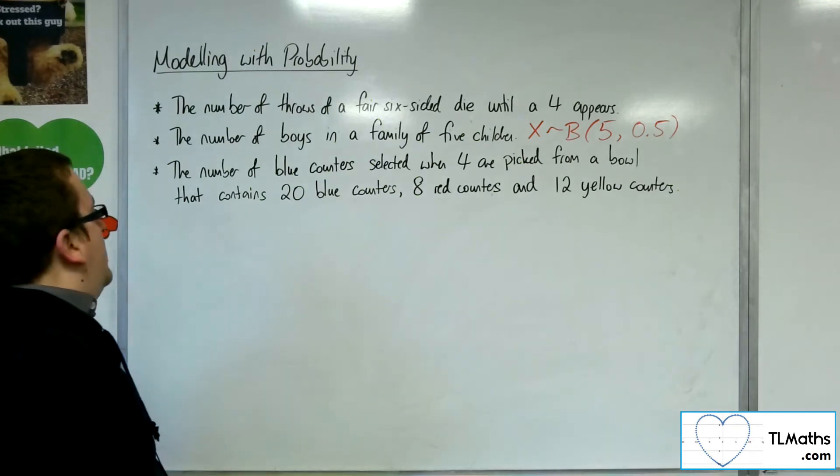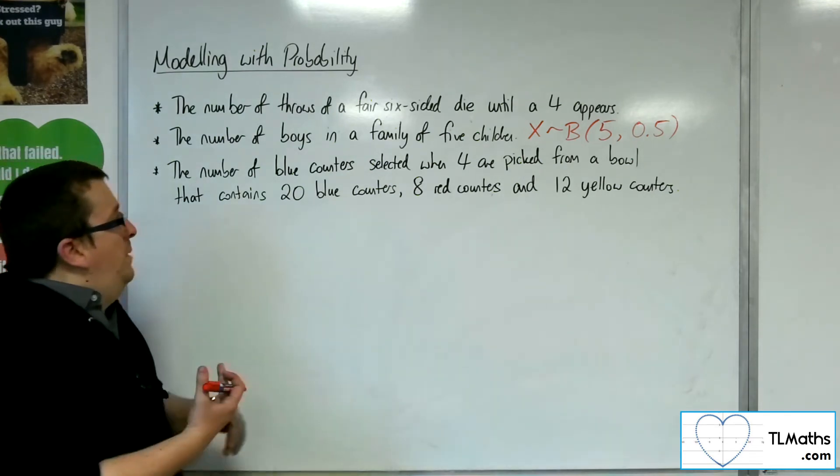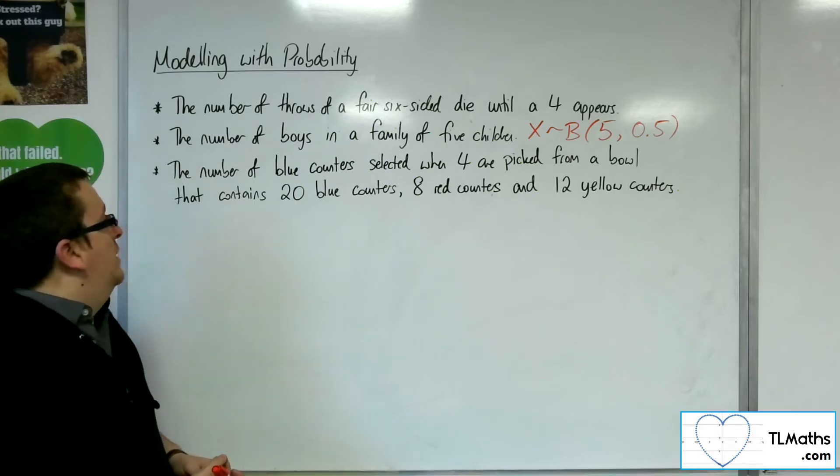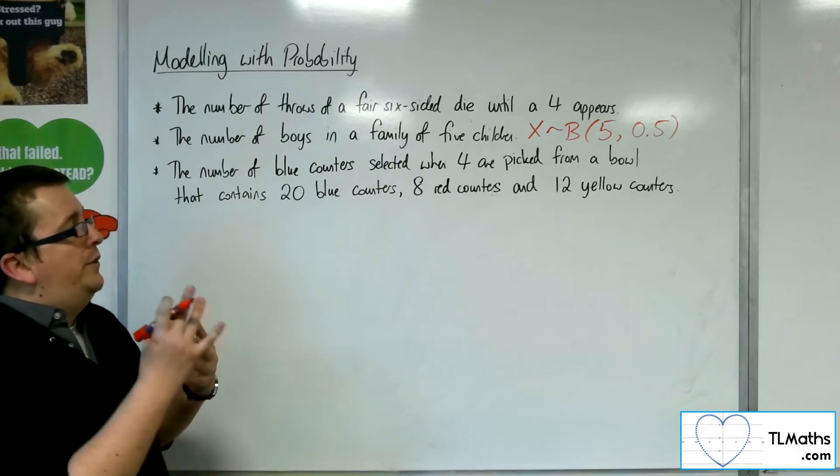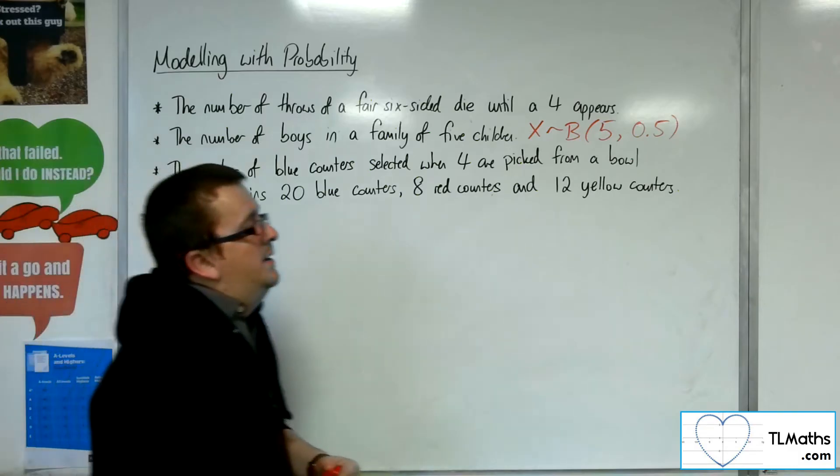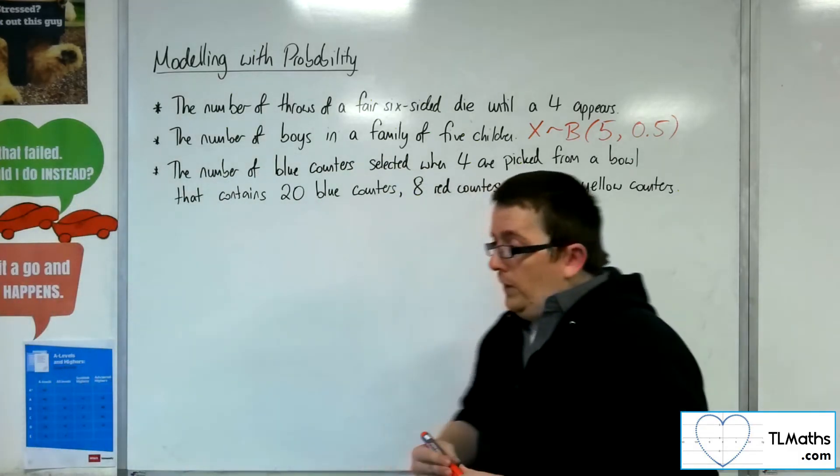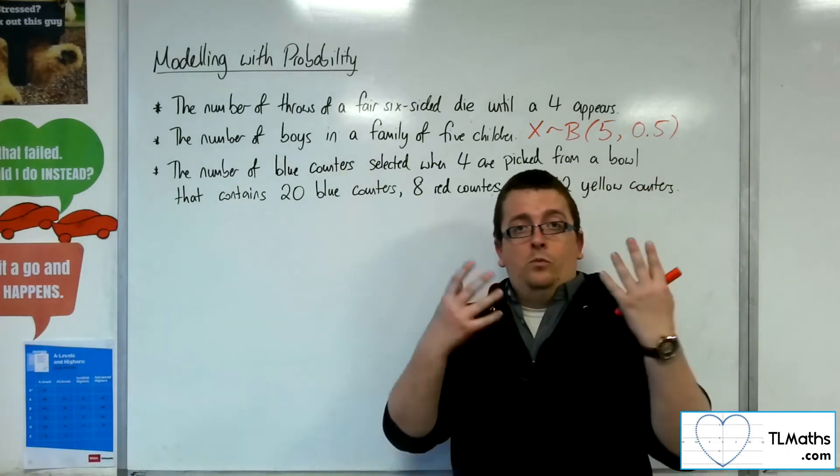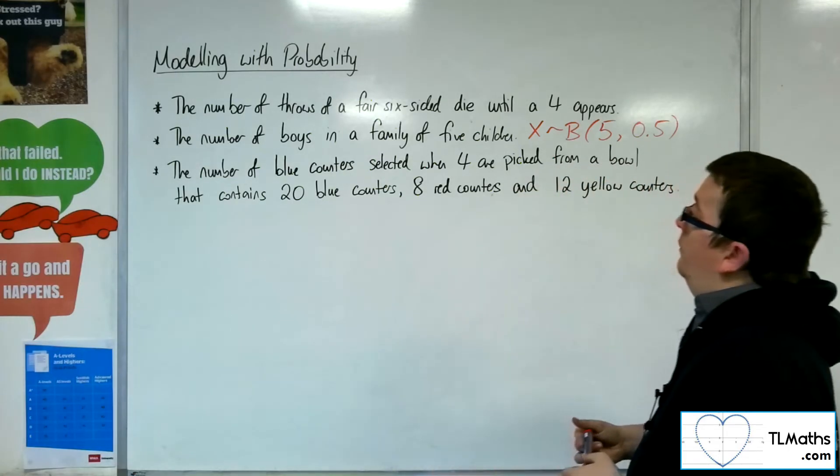So let's have a look at this third one. The number of blue counters selected when four are picked from a bowl that contains 20 blue counters, eight red counters, and 12 yellow counters. Are there a fixed number of trials? Yes, we're picking four from the bowl.